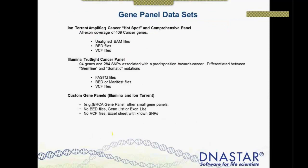Today we're going to be talking about gene panel data sets. Common examples include Ion Torrent AmpliSeq Cancer Panels — hotspot and comprehensive types. The comprehensive panel we'll look at today covers exon coverage of about 400 cancer genes. Data from Ion Torrent is typically provided as an unaligned BAM file, which is a new format, and we can process that BAM file just as we would a FASTQ file. They also provide a BED file specifying targeted regions and possibly a VCF file describing known or interesting variations in those targeted regions.